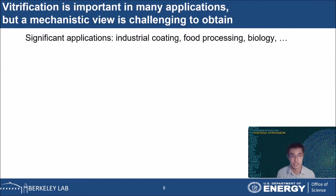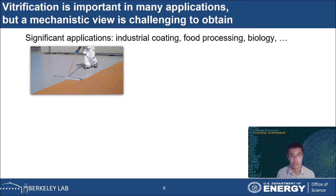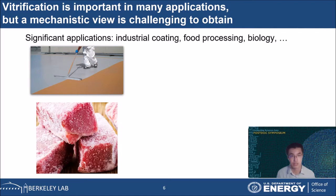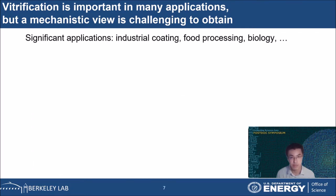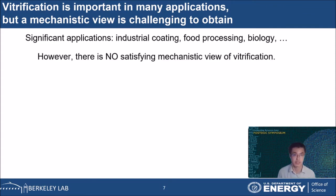Vitrification emerges naturally in many applications. The industrial coating I showed earlier is a perfect example. In addition, frozen food is actually in the glassy state without completely altering its original condition. Bacteria form glasses in their cytoplasm as a survival strategy in extreme environments. A mechanistic view of vitrification will help us better design non-equilibrium materials and deepen our understanding of some biological processes. However, so far, no satisfying mechanistic model is available and the description of vitrification is at best phenomenological.